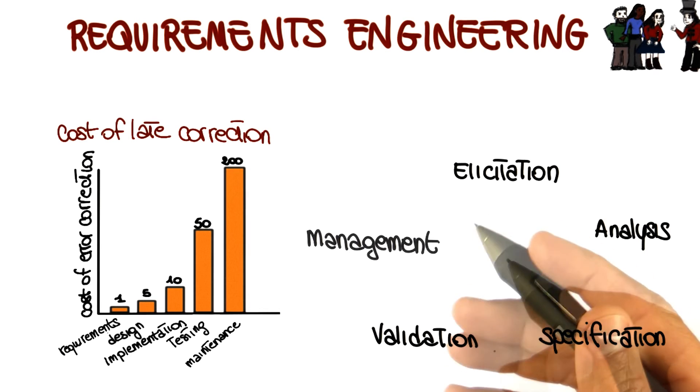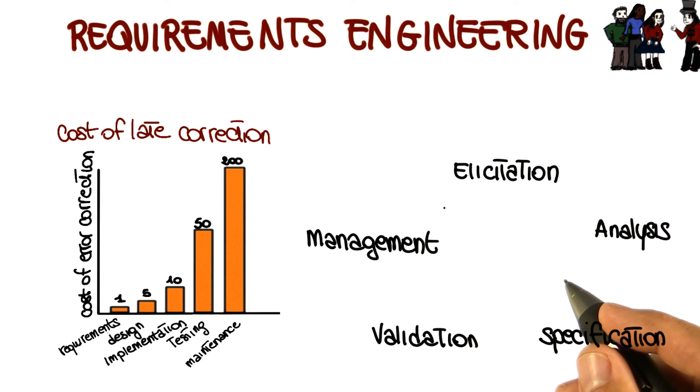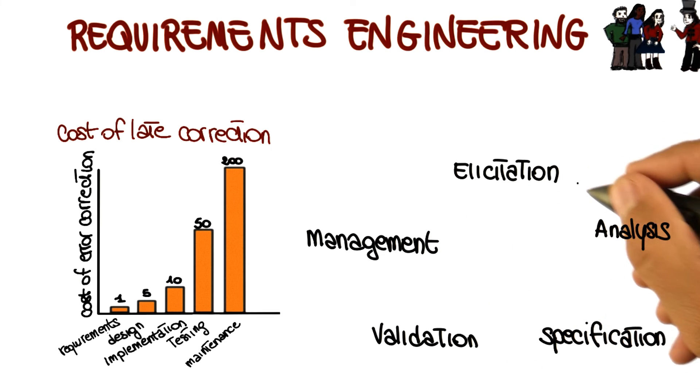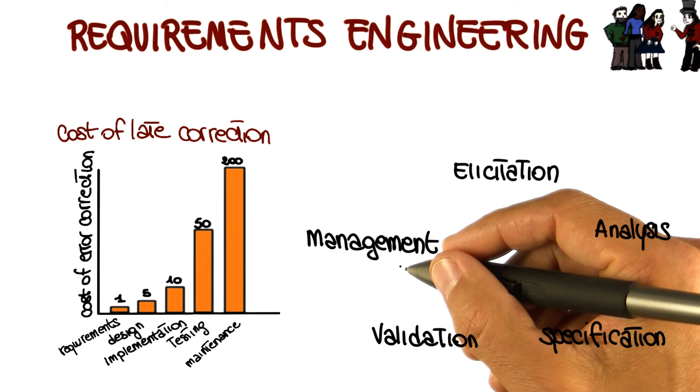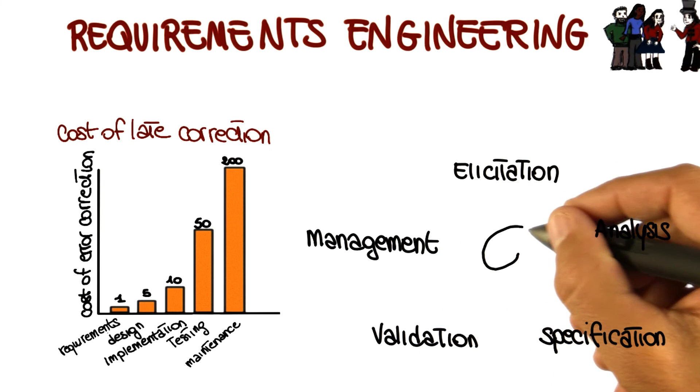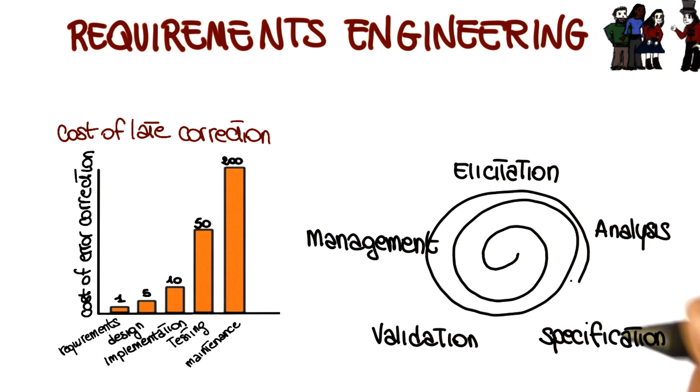Finally, the fifth step is requirements management, which accounts for changes to requirements during the lifetime of the project. Now I talked about steps, giving the impression that we go from the first step to the fifth one, and that this is a linear process. In reality, as we will see, this is more of an iterative process in which we'll cover the different phases in an iterative fashion.